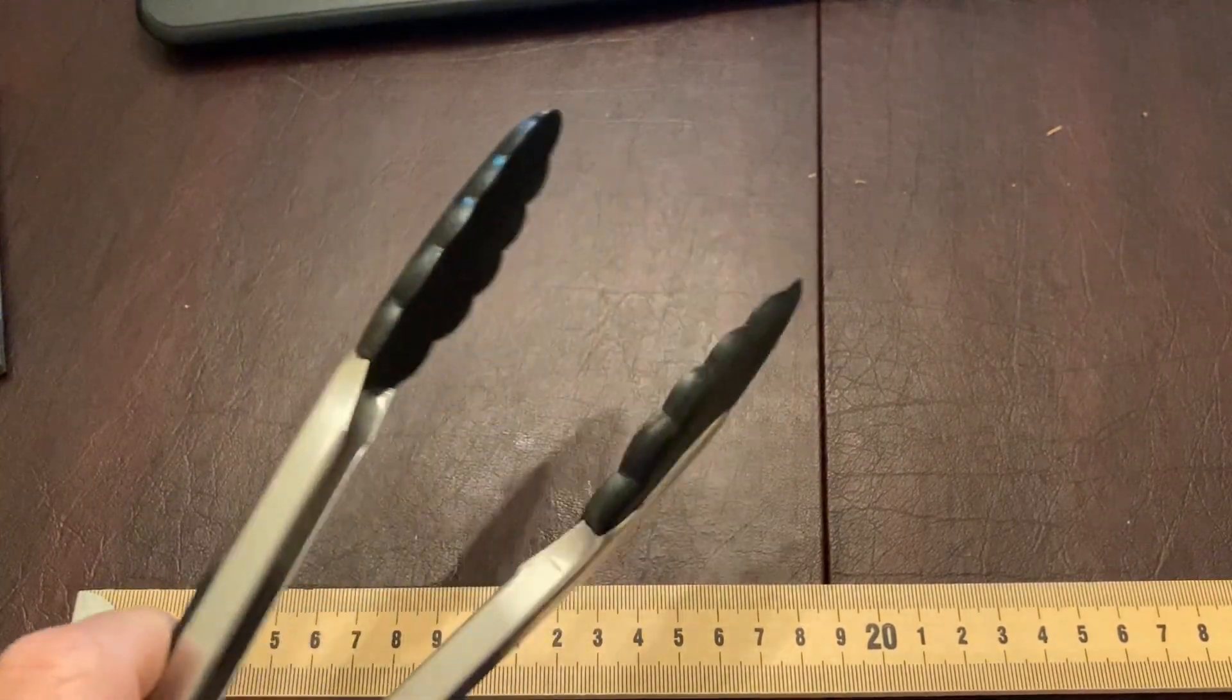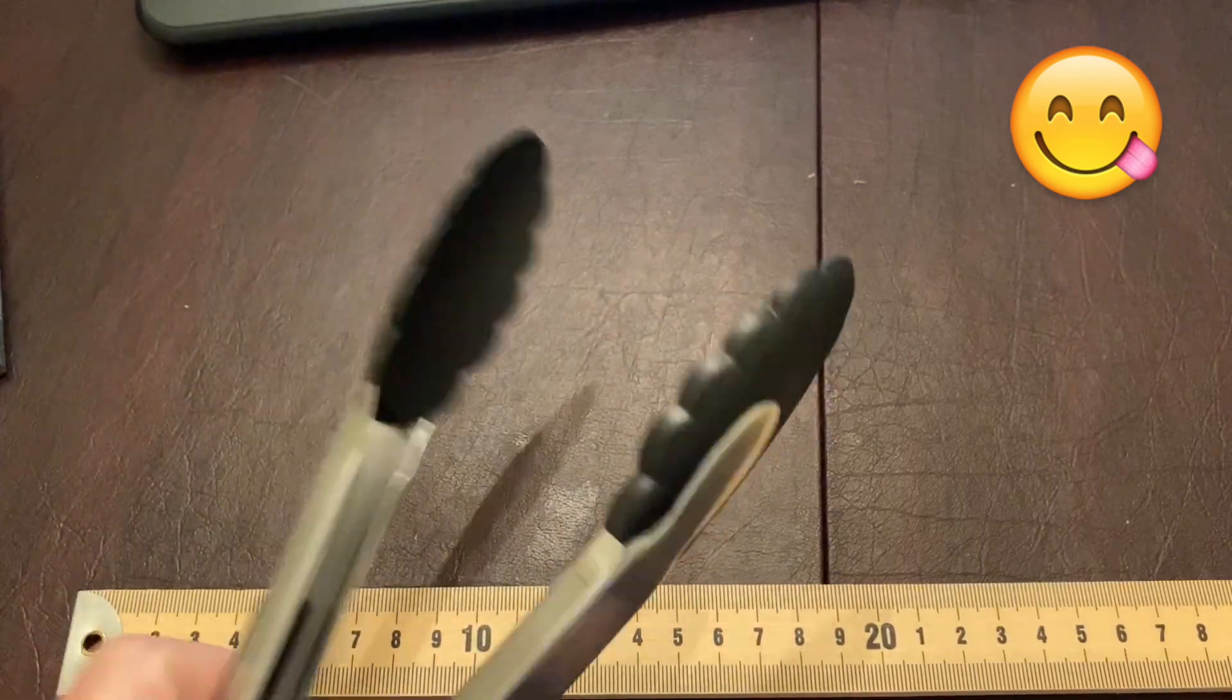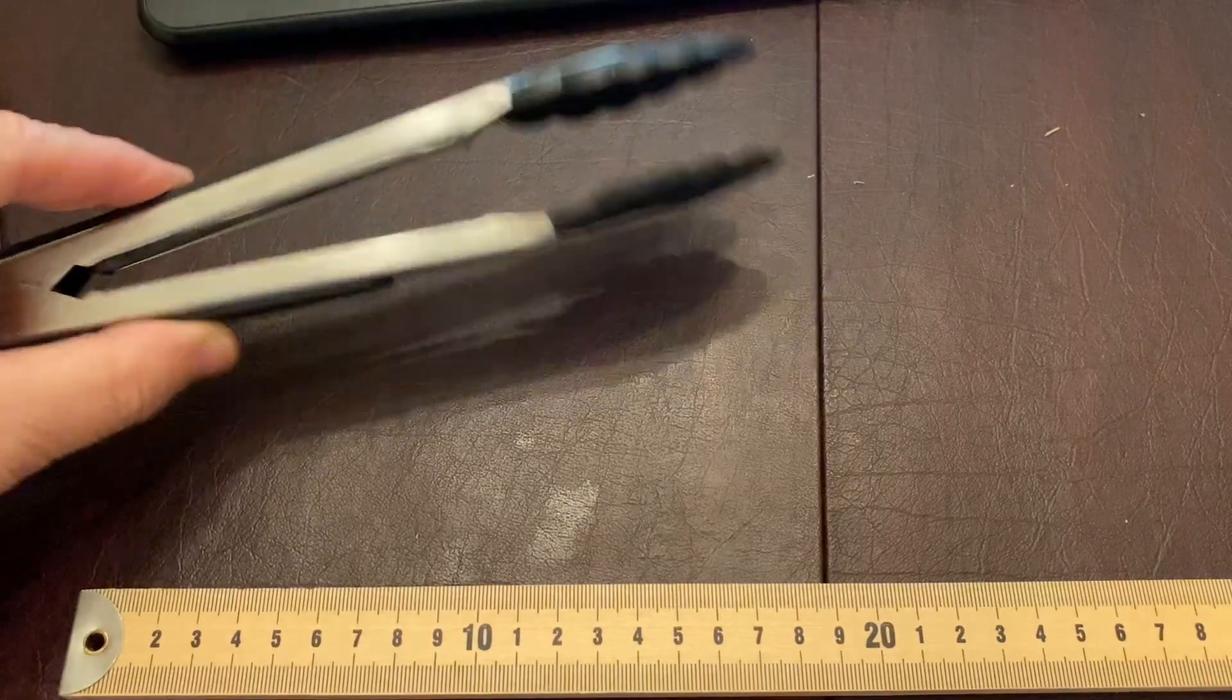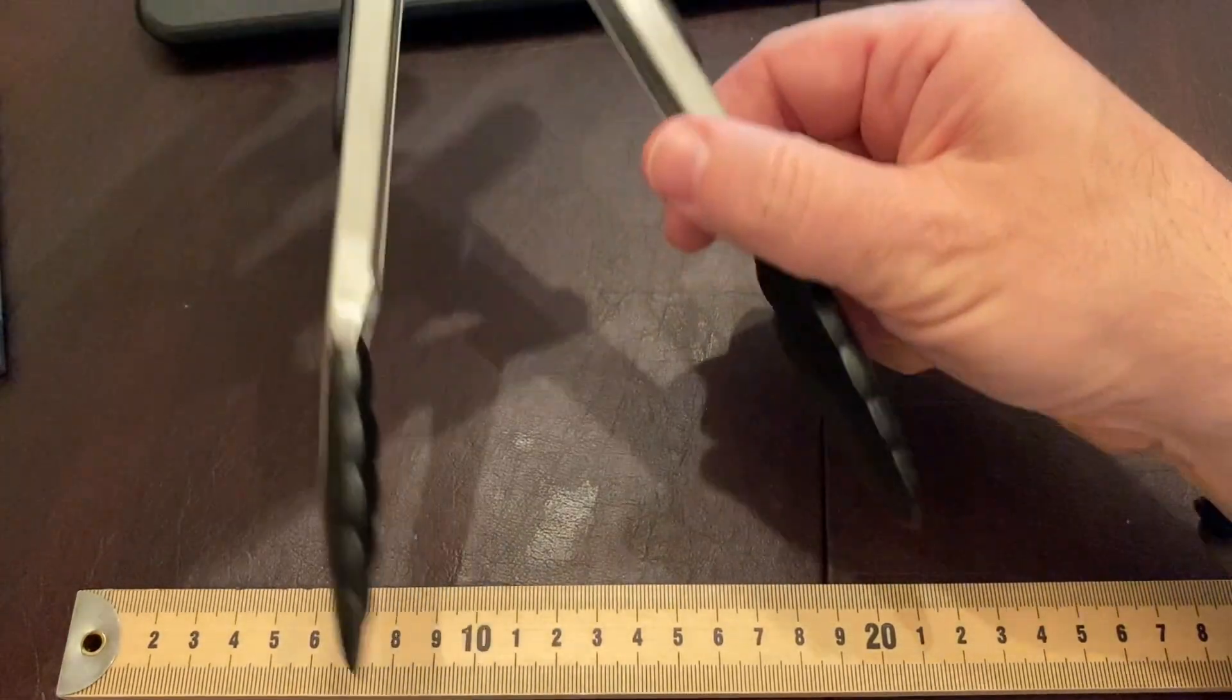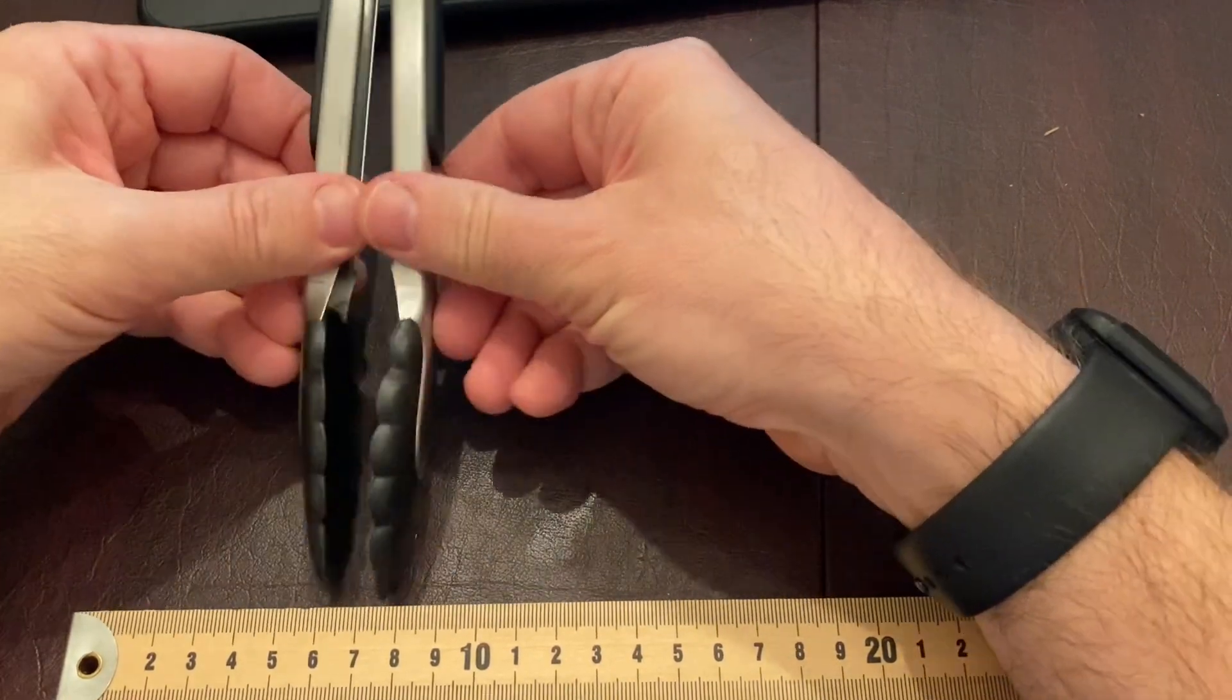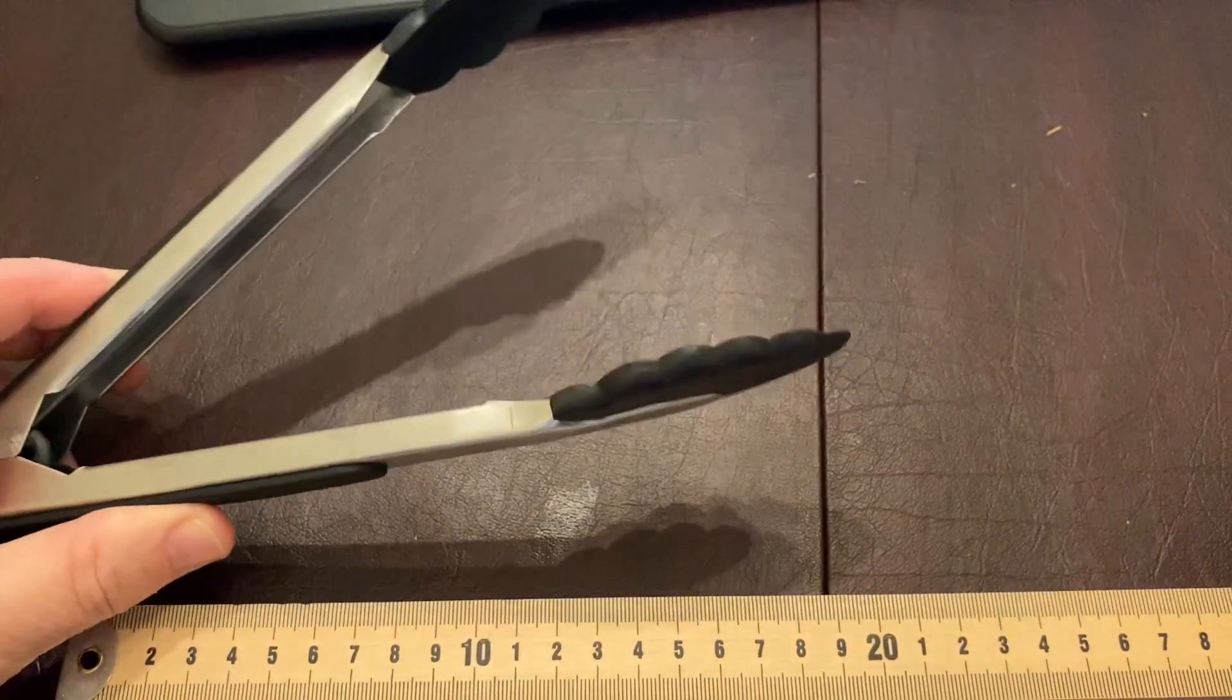like giant portobello mushroom caps that have been marinated, which is awesome by the way. So this is a machine that is multiplying your distance, because if you look at it, at the end of the tongs there, that's about 13 centimeters that it has to close. But if you look at where my fingers are on there,